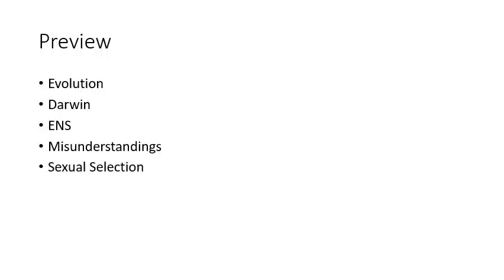In this set of slides we are going to first define evolution, then look briefly at Darwin. We'll look at evolution by natural selection, talk about a few misunderstandings with evolution, and end with sexual selection. There are more things I could include — genetics, artificial selection, life history theory — but we'll come back to life history theory when we're talking about developmental psychology.